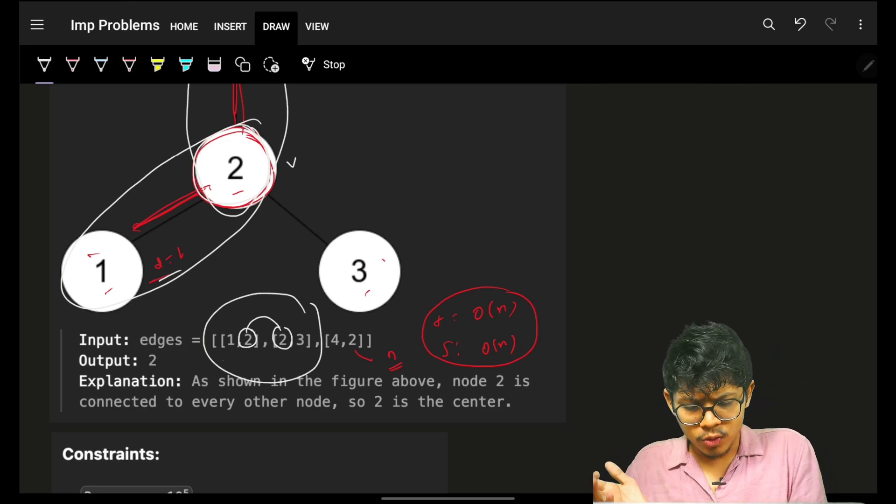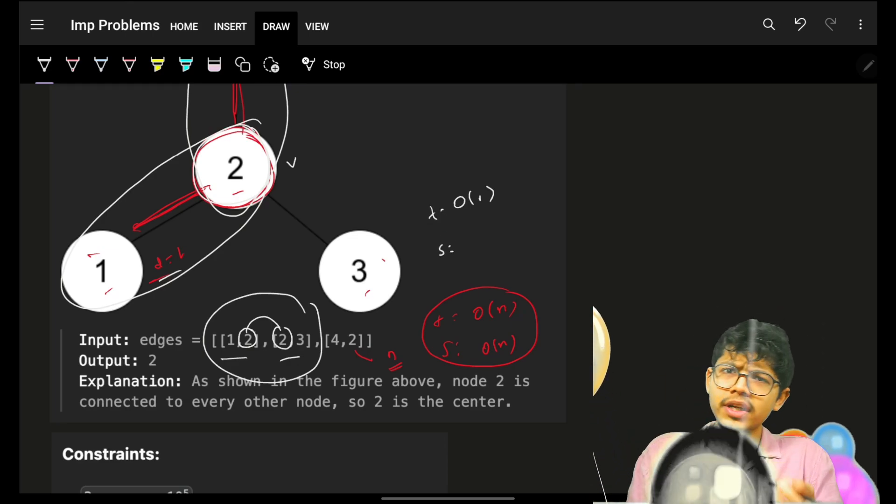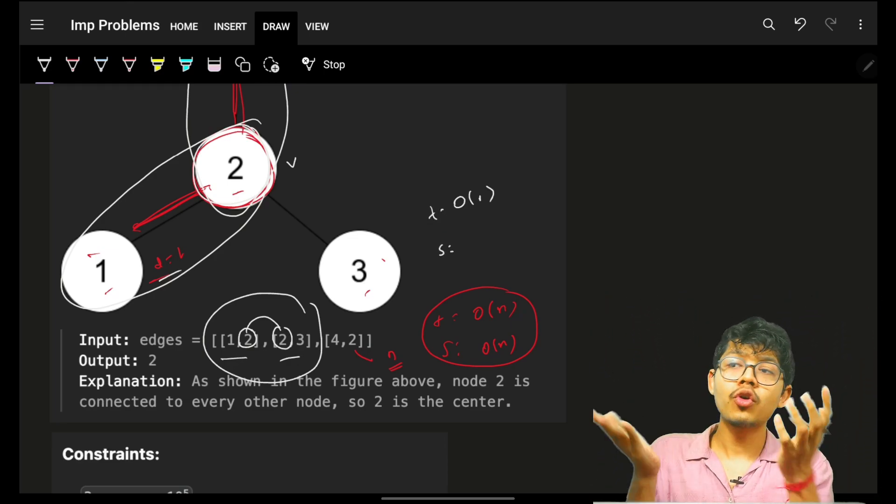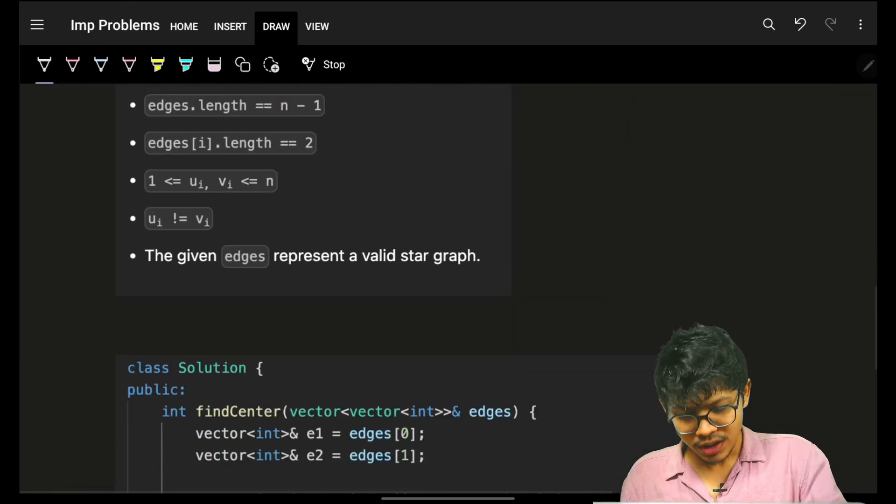So O(1) time, and space not needed because you just compare four coordinates, that's it. Again, O(1) space, and that's your most optimal answer. Cool, let's code it.